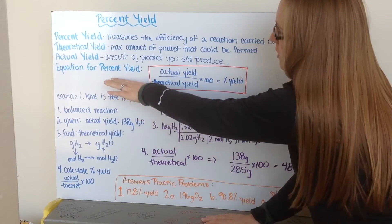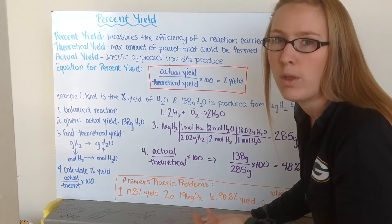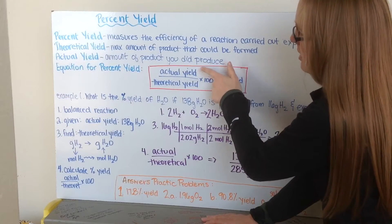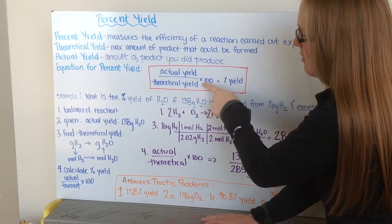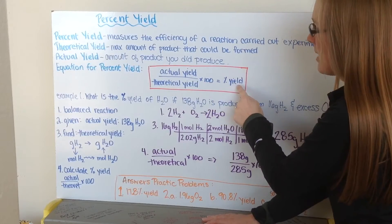Our equation to determine percent yield is just like any other percent. We have our part over our whole times 100. In this case, my part is how much I actually made, divided by my whole, my theoretical value of how much I should have made, times 100, gives me my percent yield.